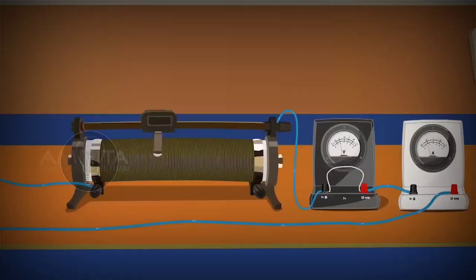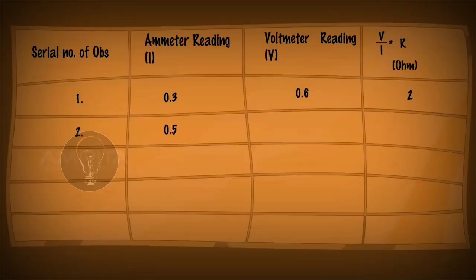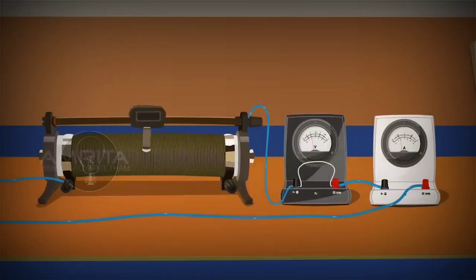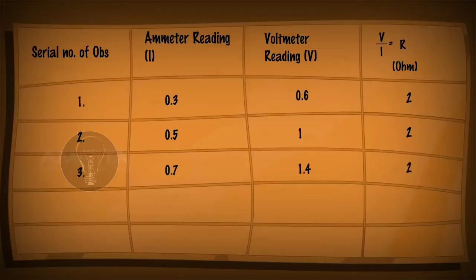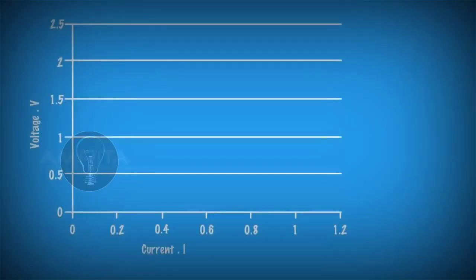Shift the rheostat contact slowly and record the reading of the voltmeter and ammeter and calculate the value of R in each case. Similarly, take at least five sets of independent observations. Record the readings and plot a graph with the values.